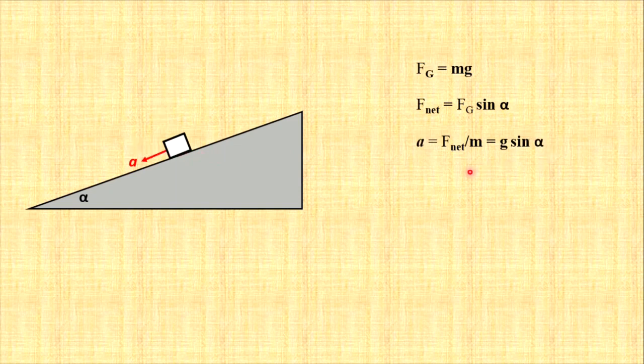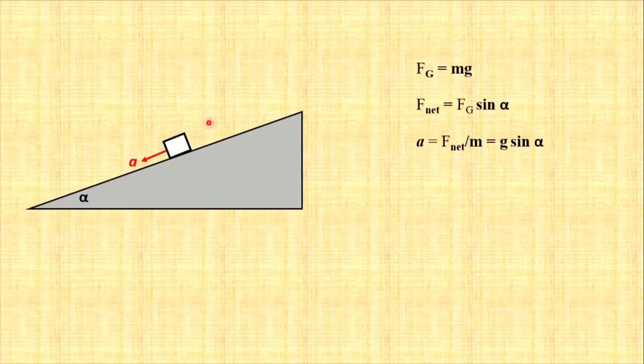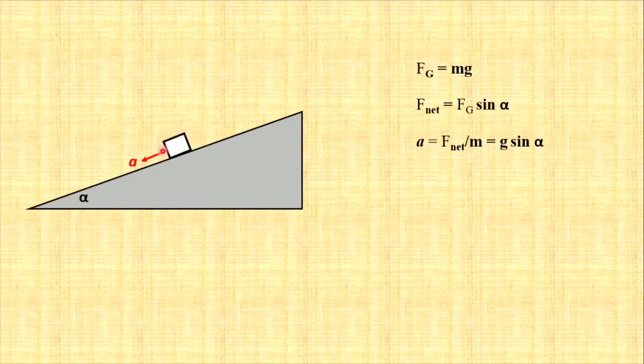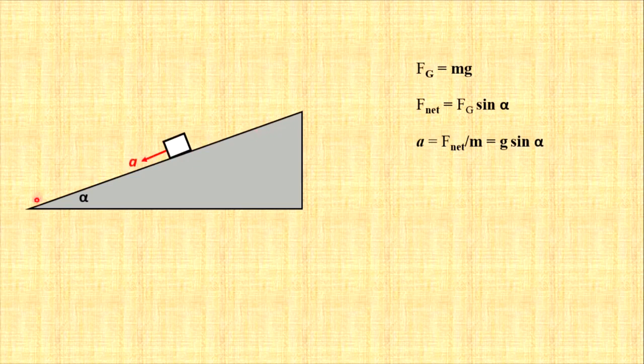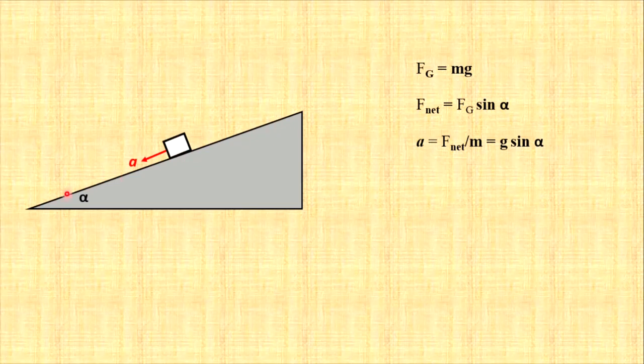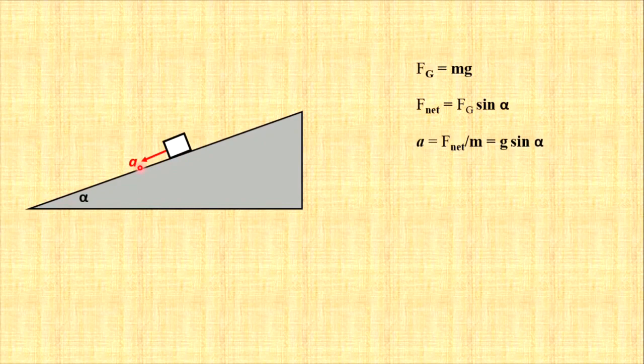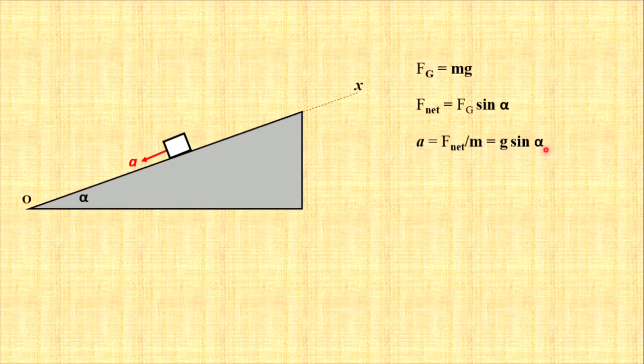The next step is to eliminate all forces. It will simplify the problem and consider the motion of the block along the incline, so one-dimensional motion with acceleration a, which can be found by this formula. To do this analysis, he introduced the reference frame, so actually only x axis along the incline.